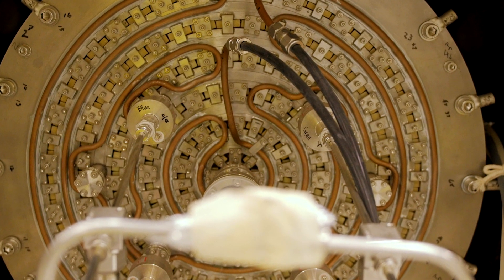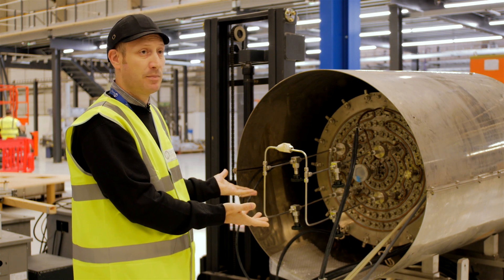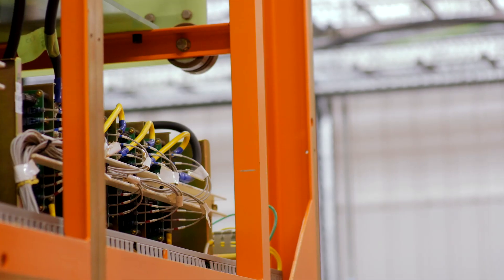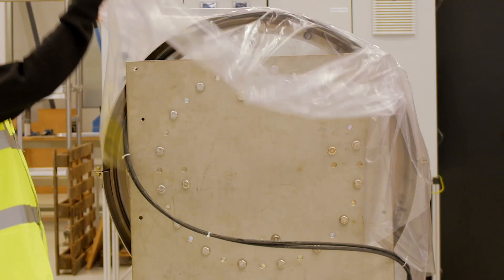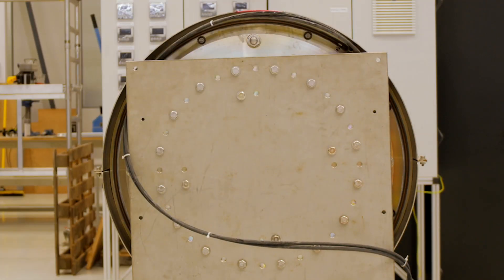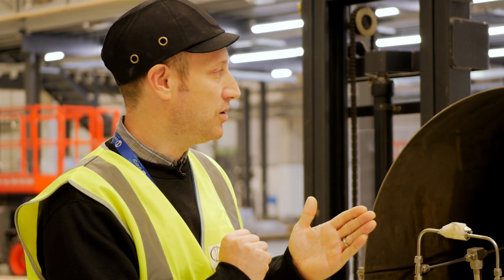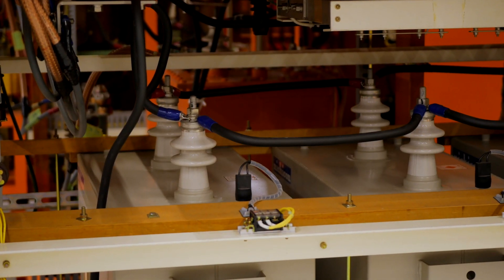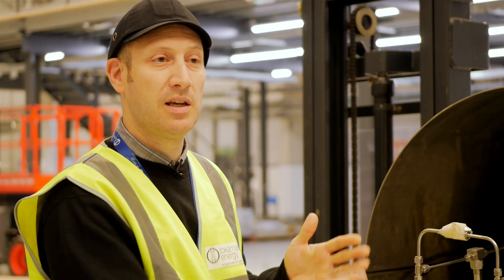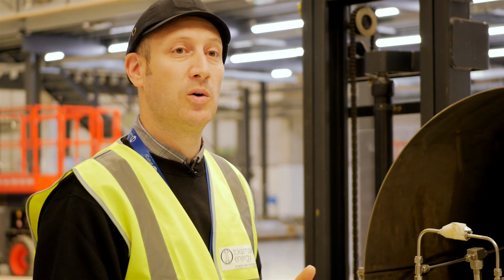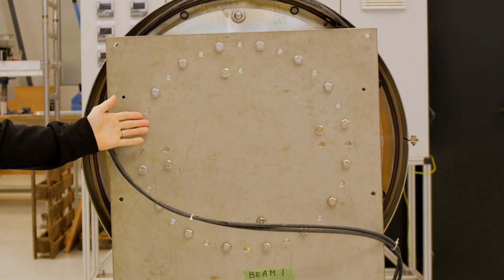We pass huge currents in the order of thousands of amps through these filaments which release electrons into the vacuum. We use an arc power supply to generate plasma and then on the other end of this source there are high voltage grids—copper grids with holes in them—and we have high voltage power supplies connected to those grids that will accelerate the ions from the plasma generating source out of this ion source and into the tokamak.